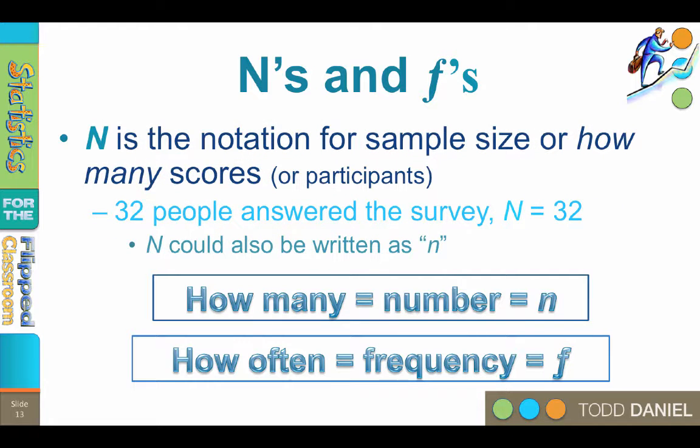Capital N is the notation for sample size, or how many scores or participants we have. If 32 people answered my survey, I have an N of 32.